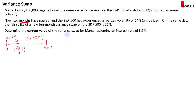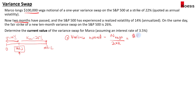Step one is to calculate the variance notional. The variance notional is based on the vega notional divided by two times the strike. So the vega notional is 100,000, and we divide by two times the strike, which is 22. This gives us 2,272.73.